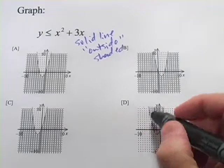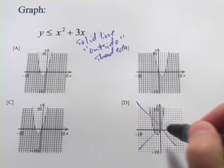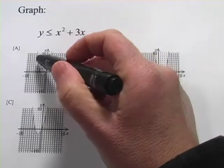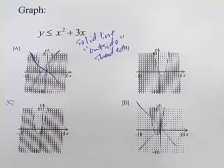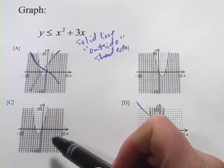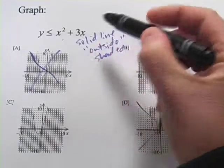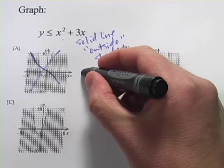So it looks like we can rule out d because that has the inside shaded and it looks like we can rule out a because that's a dashed line. So we just have to differentiate between b and c. I'm going to find the x-intercepts here by factoring.